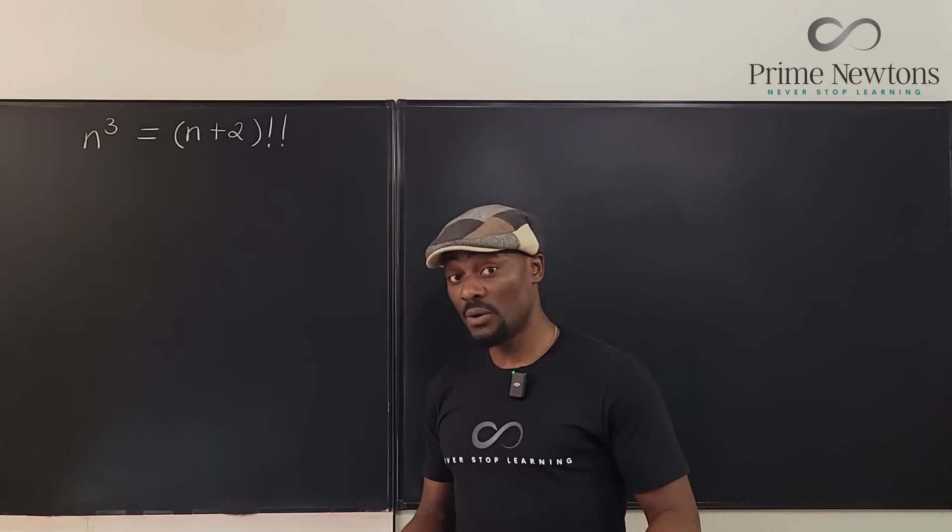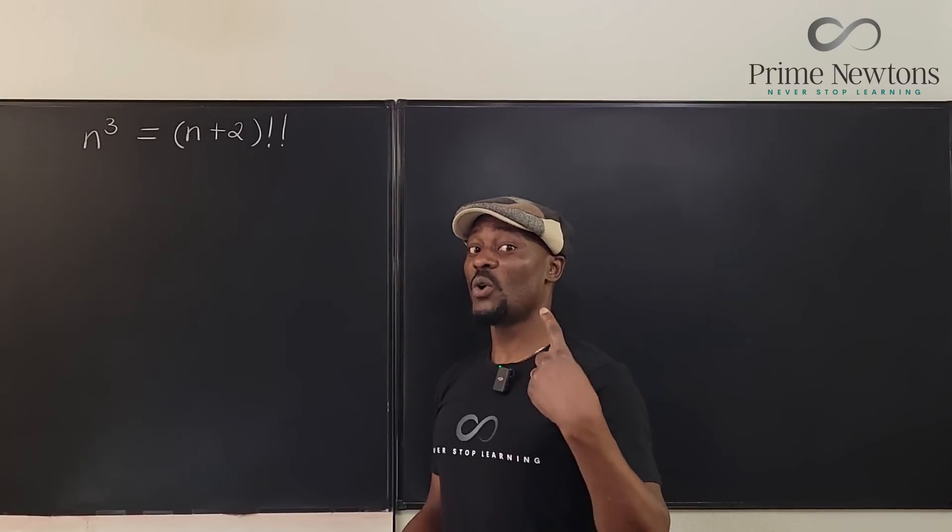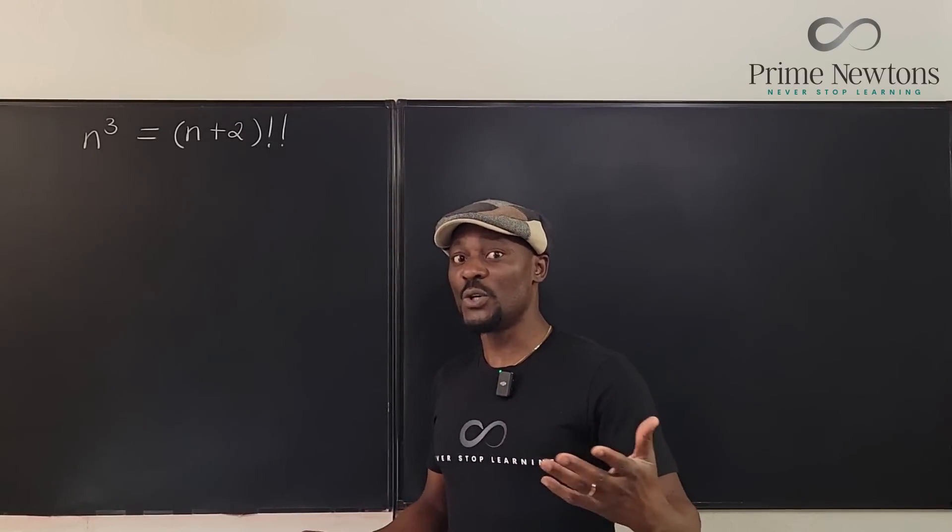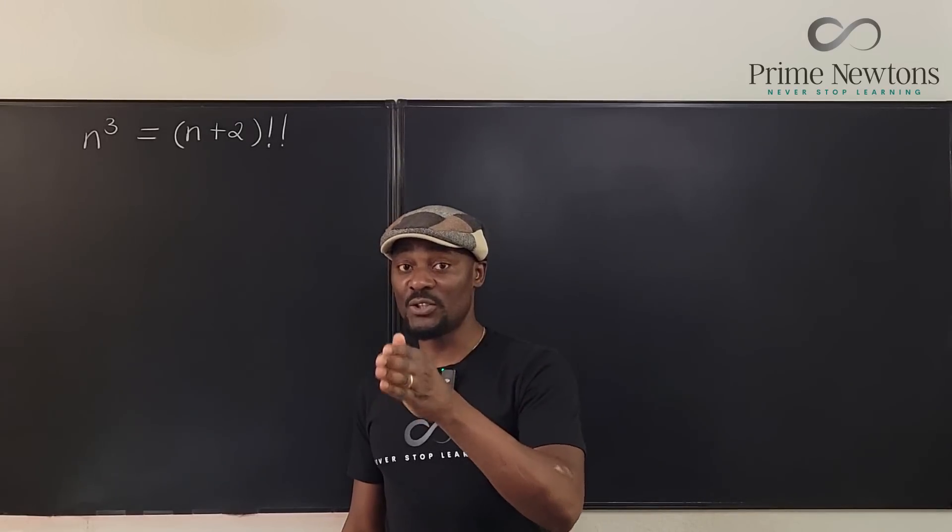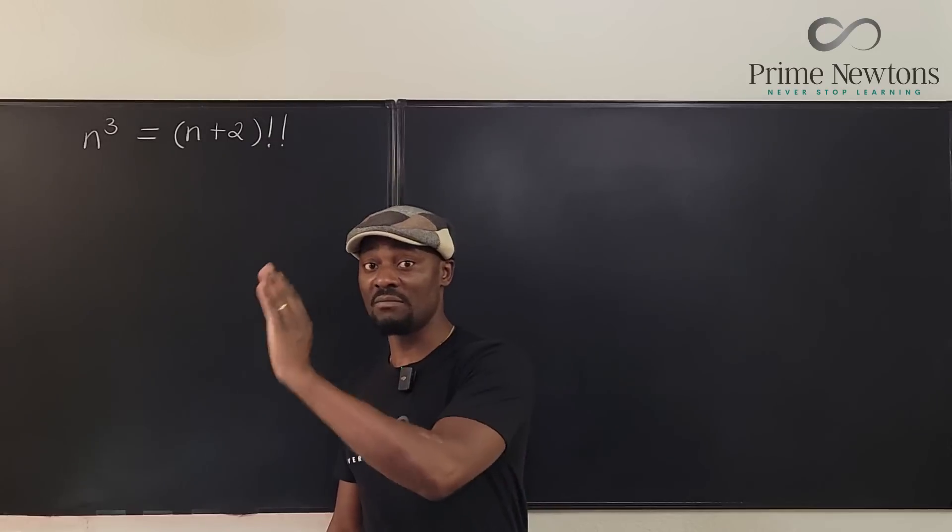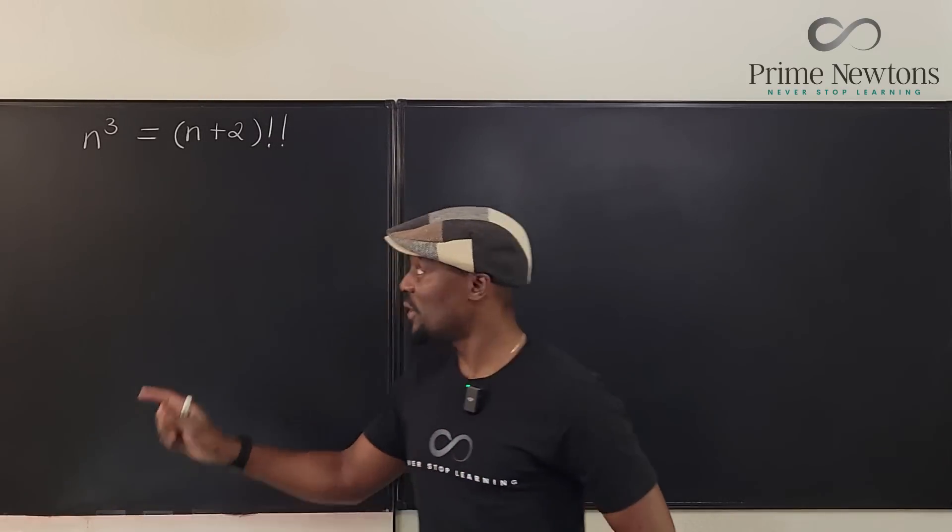So what is a double factorial? You see, in a single factorial, which we call the factorial process, what you're doing is you're going from n to n minus 1 to n minus 2 to n minus 3, and you're multiplying until you get to 1. However,